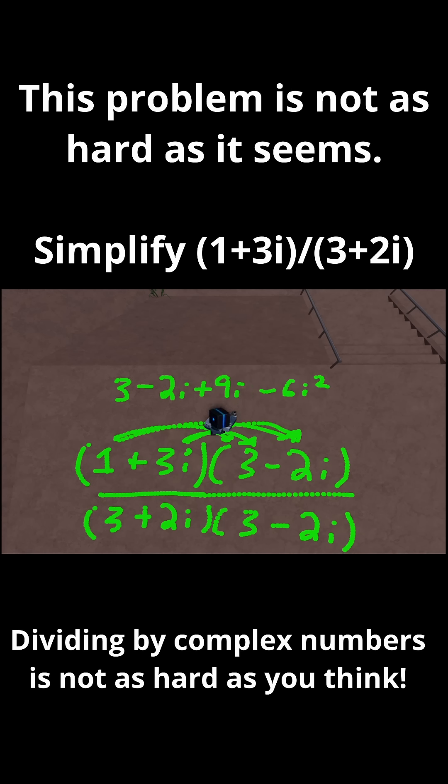So first, minus 2i and plus 9i, that just becomes plus 7i. So I have 3 plus 7i. And then next, negative 6i squared. Well, i squared is just negative 1. And then minus 6 times minus 1 is positive 6. And then I can do 3 plus 6. And that's just 9.